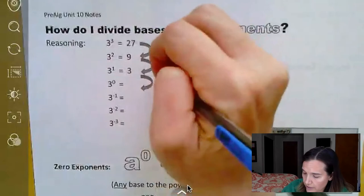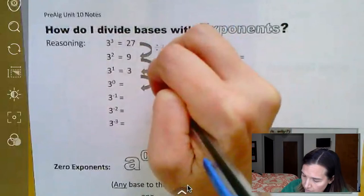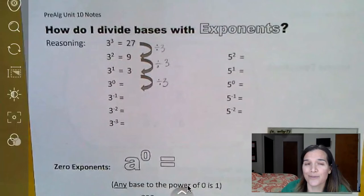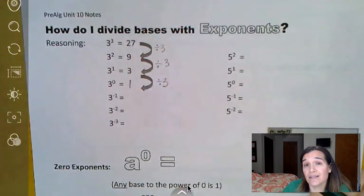So 27 divided by three is nine. Nine divided by three is three. And then three divided by three gives us the answer to three to the zero power, which is going to be one. And the rule is anything to the zero power is one.